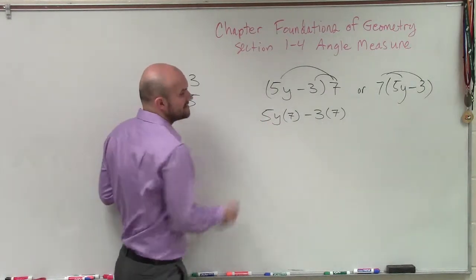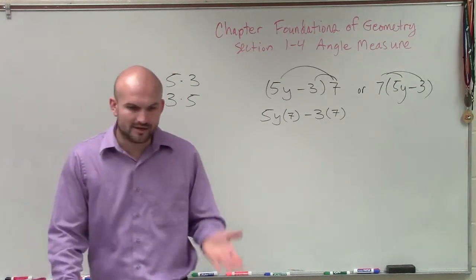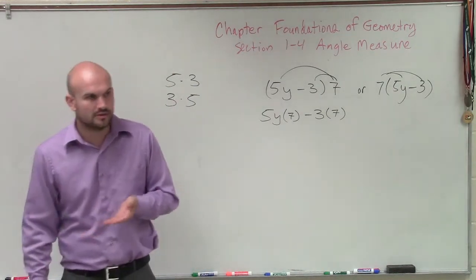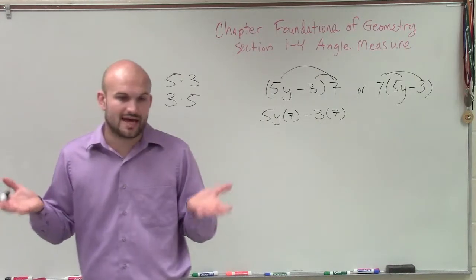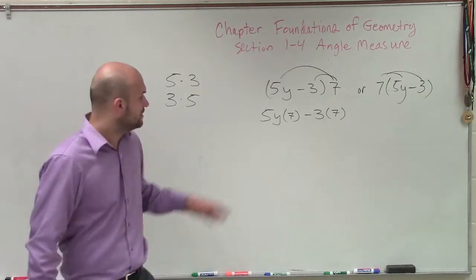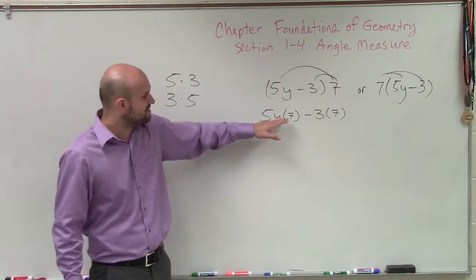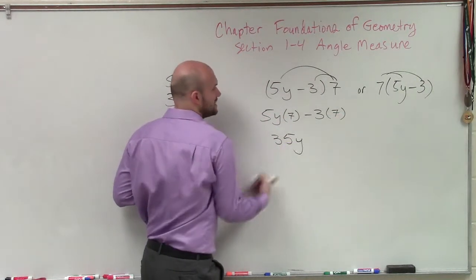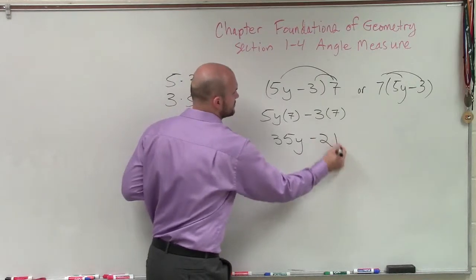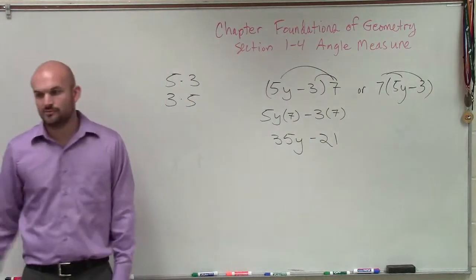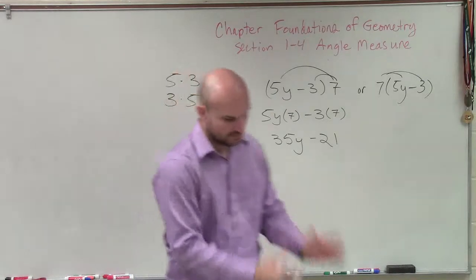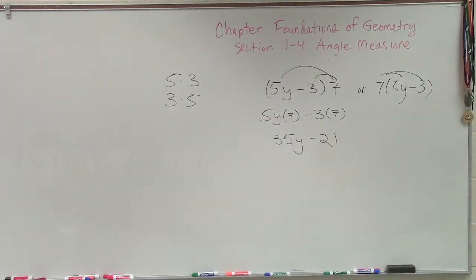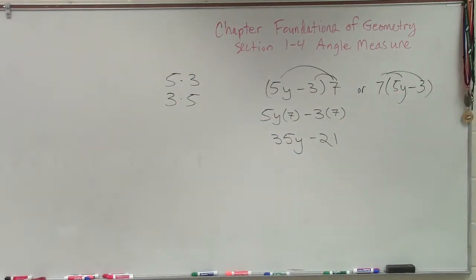But then I have 5y times 7. Well, if I'm multiplying a variable times a variable, you just multiply those two variables. You just say like m times n is just m times n. Here, if I have 7 times 5y, that's going to turn to 35y. And then negative 3 times 7 is negative 21. And that would be the final answer. OK? Could you answer it now?